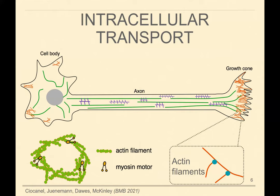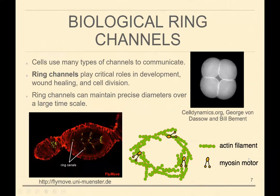Actin filaments can be found in different parts of the cell. You can see them in the growth cone where they can lead to pushing that out, leading to growth. They can organize into very interesting structures — into bundles in some situations, into asters, or be homogeneously distributed. And the topic of today's talk: they can organize into ring channels, these circular structures. The way they do that is by interacting with a different kind of molecular motor protein called myosin motors. These ring channels can be seen in a number of different biological systems because they play critical roles in development, wound healing, and cell division.